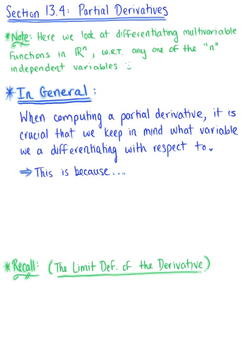In section 13.4, we are looking at partial derivatives. Here we're going to be differentiating multivariable functions in Rⁿ with respect to any one of their n variables.